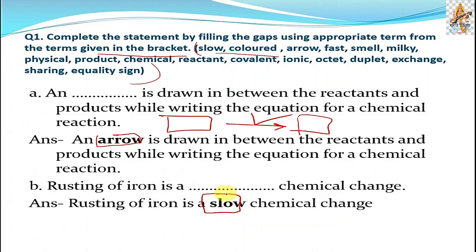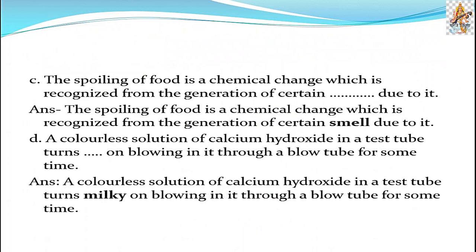Part c: The spoiling of food is a chemical change which is recognized from the generation of certain smell due to it. So if food is spoiled or not you find it by smell. If smell or odor is bad then you can recognize it has changed in its chemical property and it is spoiled.